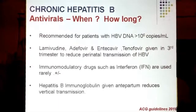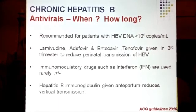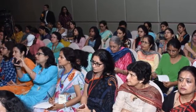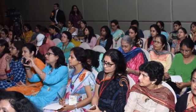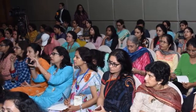For chronic hepatitis B — when do we start antivirals? Recommendations say that if HBV-DNA titers are more than 10 to the power of six copies per ml, then we can start these drugs. Although these drugs are category C and D, lamivudine and adefovir can be given in the third trimester to reduce perinatal transmission. Immunomodulatory drugs such as interferons are rarely used. Hepatitis B immunoglobulin given antepartum reduces vertical transmission.